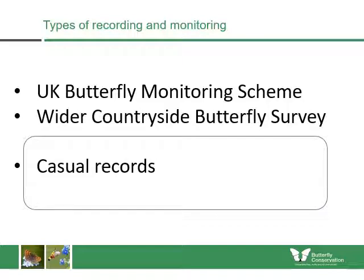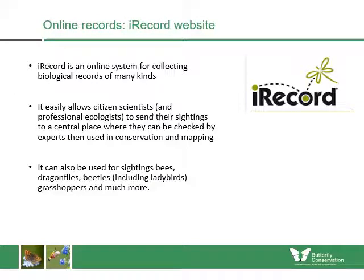First, I'll deal with casual records — this is when you might see a butterfly when you're out and about and then send your sighting to us. One of the best ways to send in casual records is through a website called iRecord. iRecord is an online system for collecting biological records of many kinds, allowing citizen scientists as well as professional ecologists to send in their sightings to a central place where they can be checked by experts and included in our databases and used in mapping. You can also use it for bees, dragonflies, beetles including ladybirds.